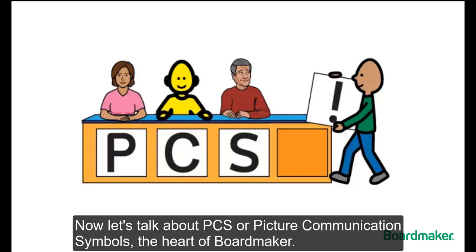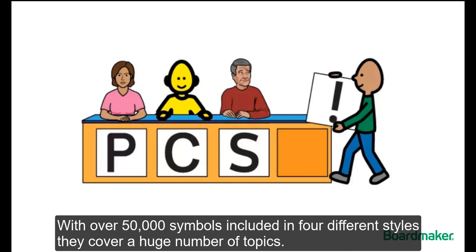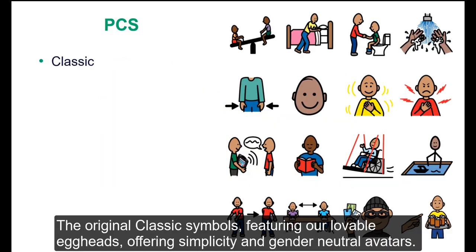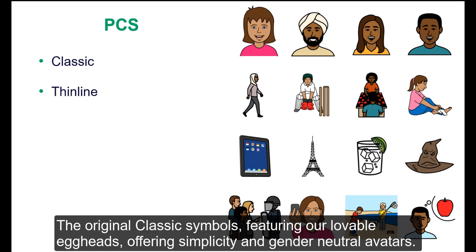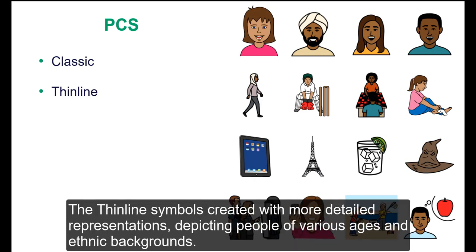Now let's talk about PCS, or Picture Communication Symbols, the heart of BoardMaker. With over 50,000 symbols included in four different styles, they cover a huge number of topics. The original classic symbols feature our lovable eggheads offering simplicity and gender-neutral avatars. The thin line symbols were created with more detailed representations depicting people of various ages and ethnic backgrounds.